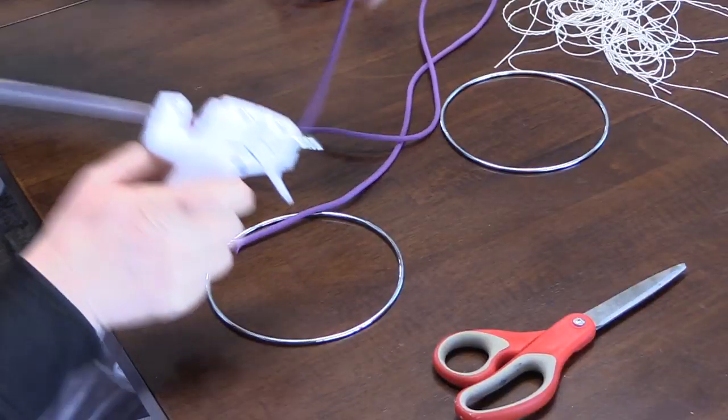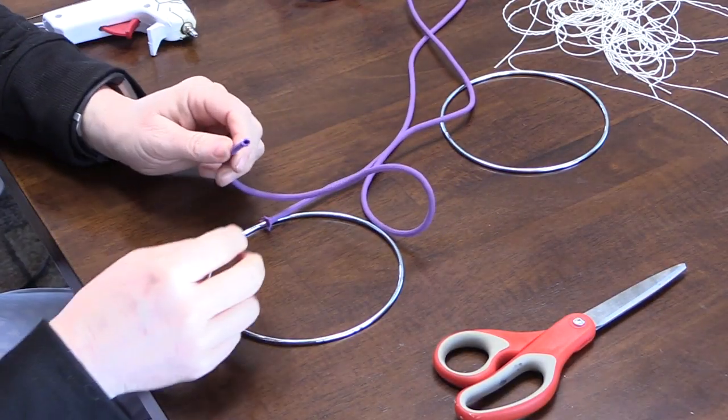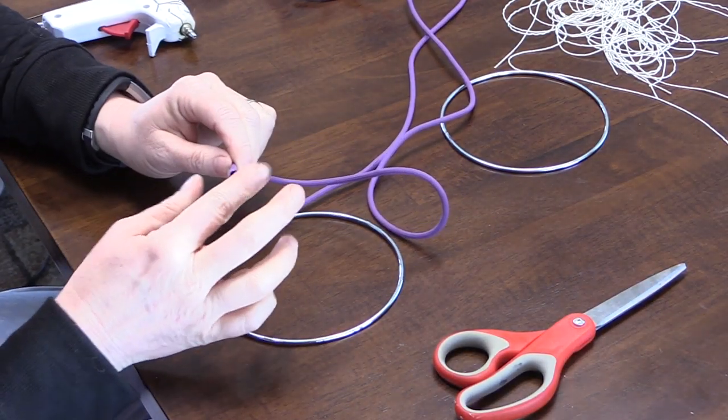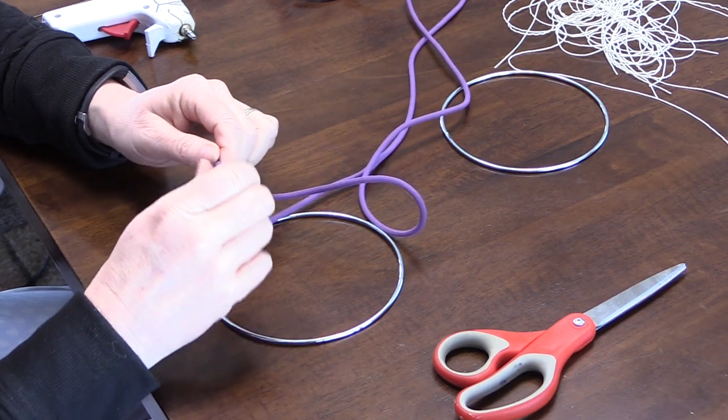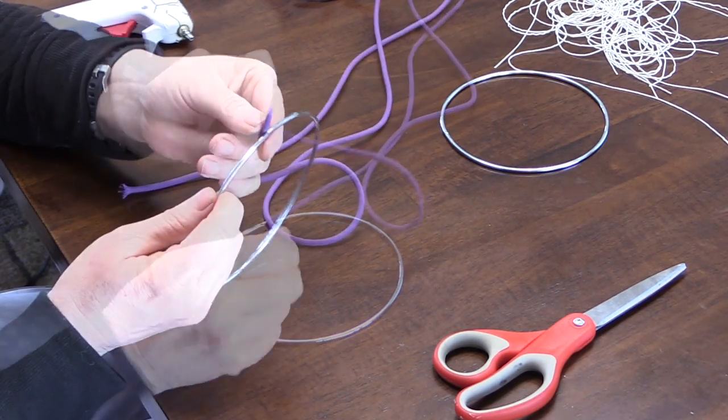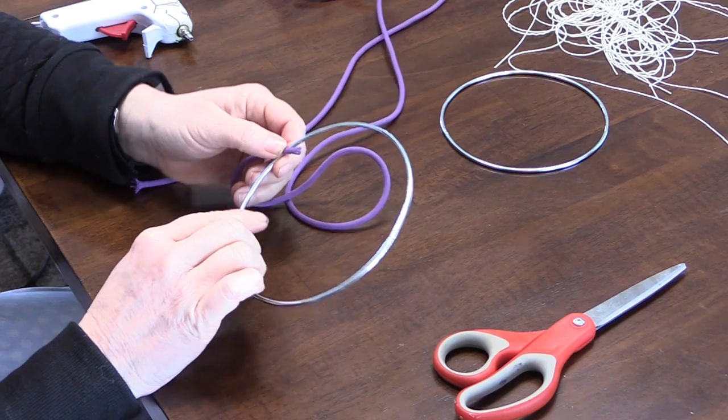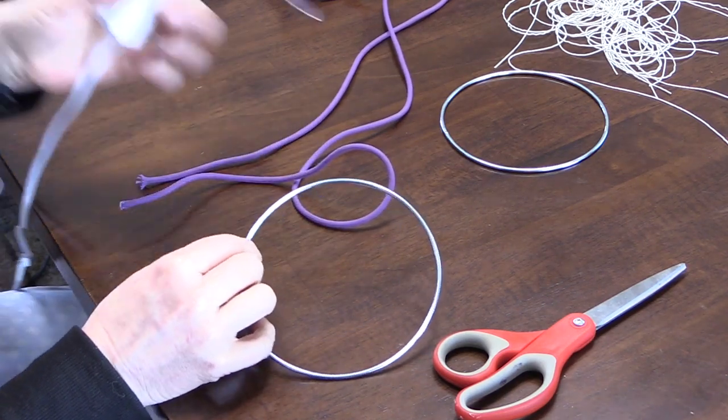Just a little bit of glue. And then I took one end of the paracord and glued it on to the ring.